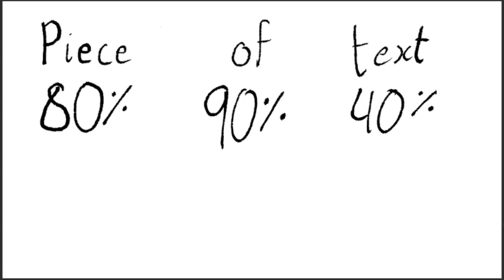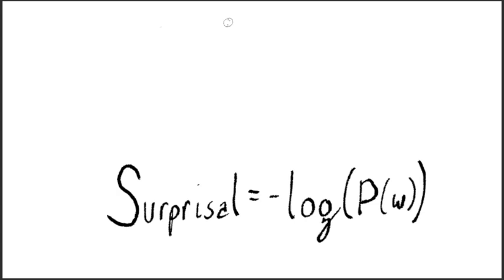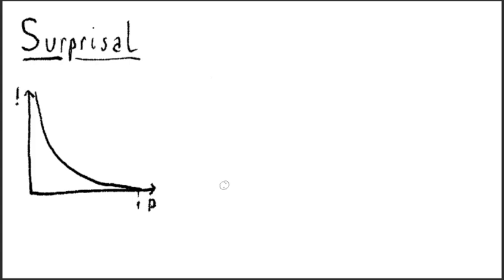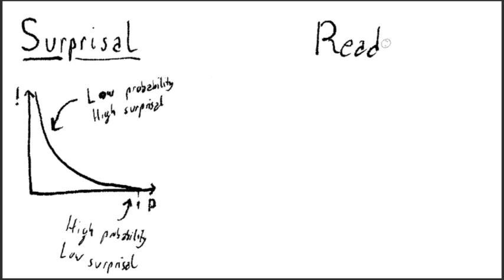We can then take the negative log probability of this word to gain a new metric called the surprisal. Surprisal can be understood as how surprising a piece of text is, or, from an information perspective, how much information this word or token provides to the reader. It turns out that the calculated surprisal of a word is proportional to many psychological effects, including reading time.